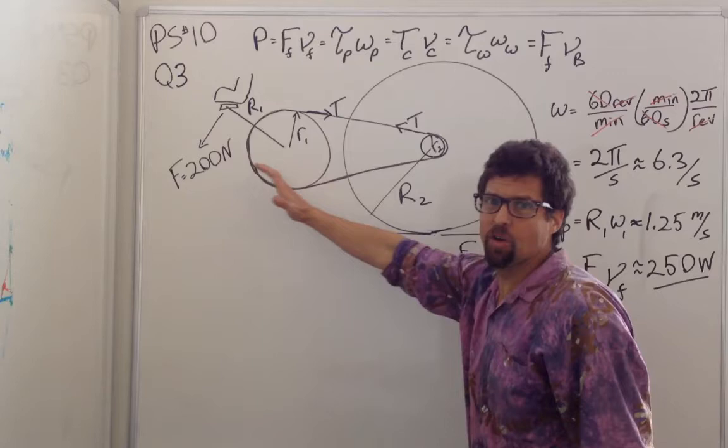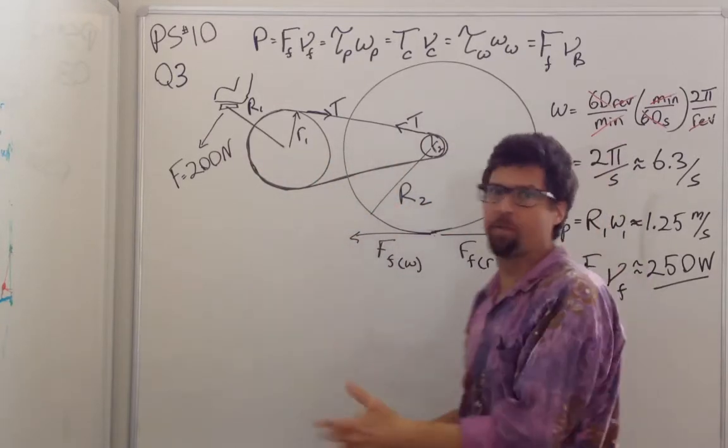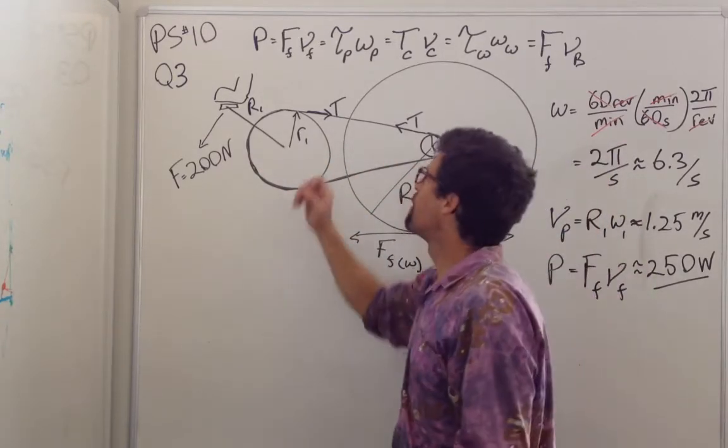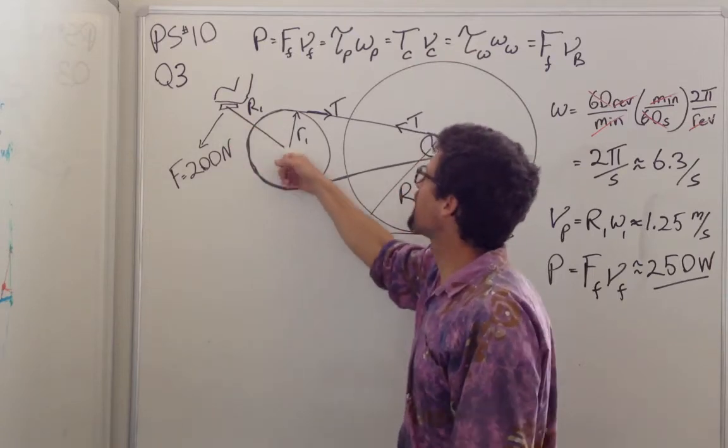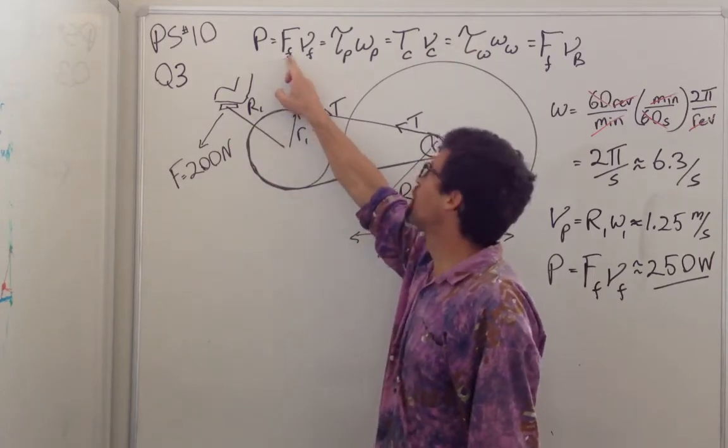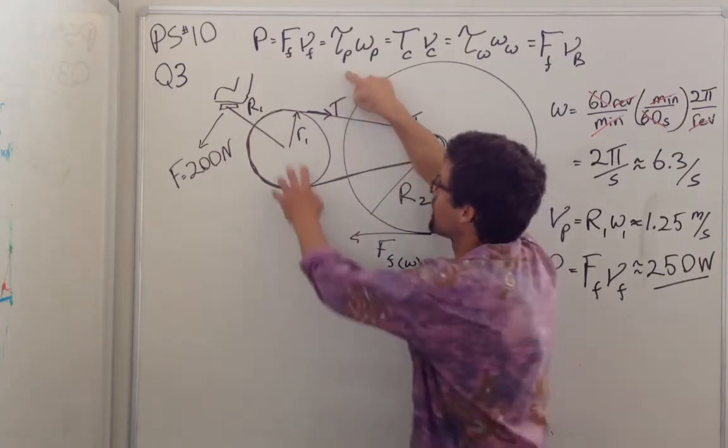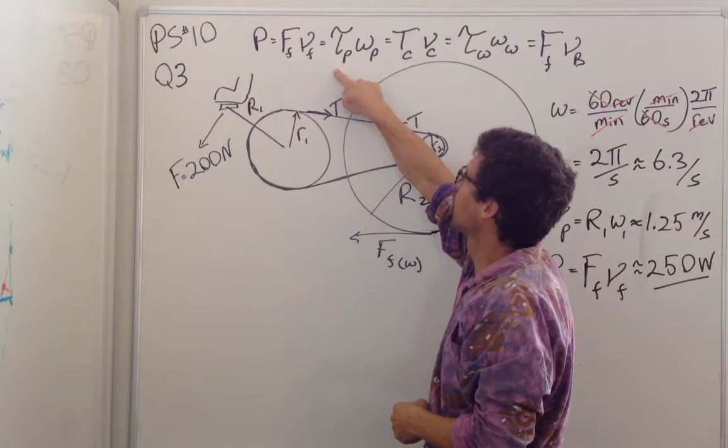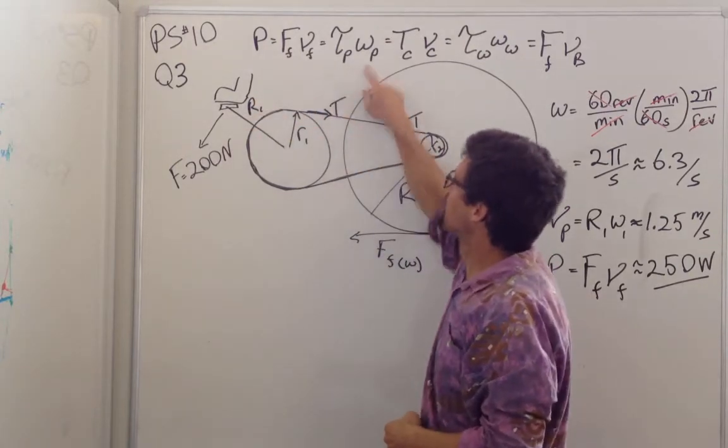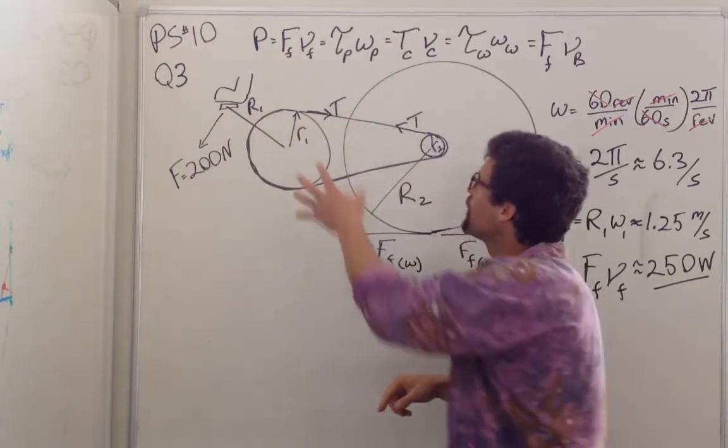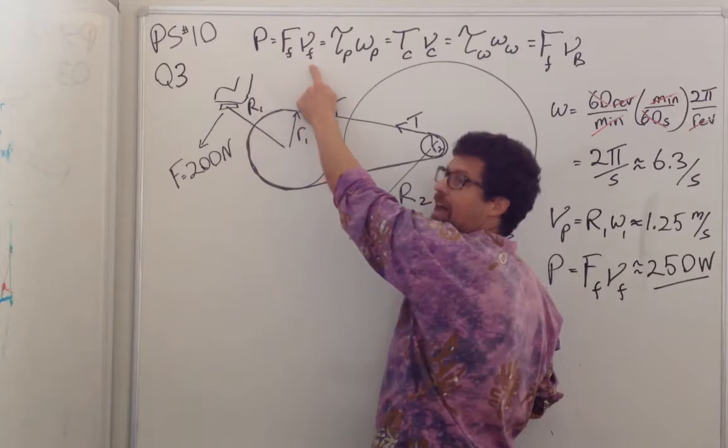What's the same across here is the power. As long as there's no dissipative forces like friction, the power that the foot puts into the pedal, which is the force of the foot times the velocity that the foot's moving, is going to be equal to the power around this hub, which is the torque provided by the foot times omega. So every one of these is a force term and a velocity term.